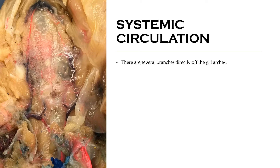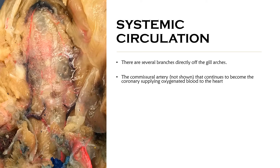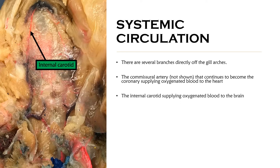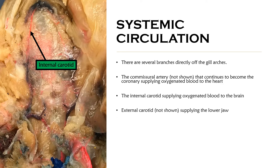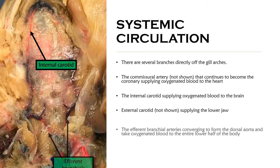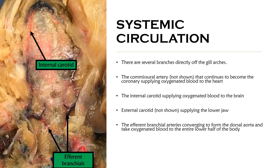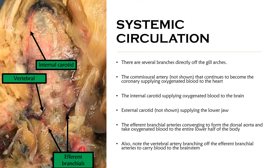There are several branches off the gill arches to be aware of. One is the commissary artery, which isn't shown, but it continues to the heart to become the coronary and supply oxygenated blood to the heart. There's also the internal carotid supplying oxygenated blood to the brain, and the external carotid, which is not shown, supplying oxygenated blood to the lower jaw. The efferent bronchial arteries converge to form the dorsal aorta and take oxygenated blood to the entire lower half of the body — think of efferent as going away from the gills.